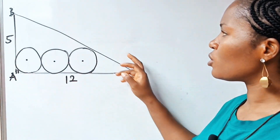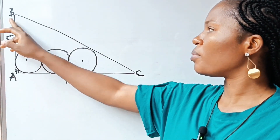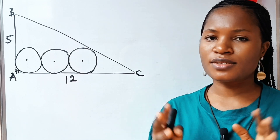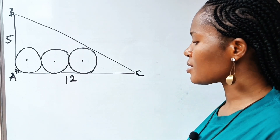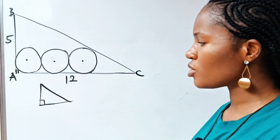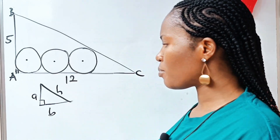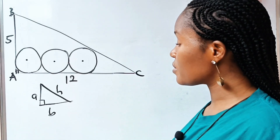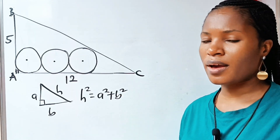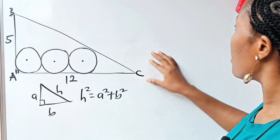Because this is a right-angled triangle, let's find the value of BC using the Pythagorean theorem. According to Pythagoras, if you have a right-angled triangle, the side facing the right angle is our hypotenuse. If we call the remaining sides A and B, then the hypotenuse squared is equal to A squared plus B squared. Let's relate that to what we have on the board.